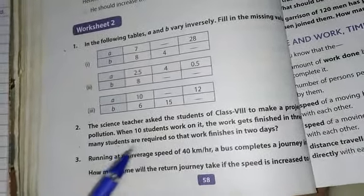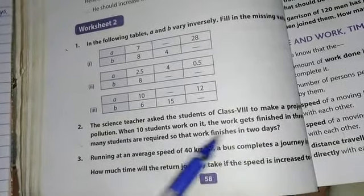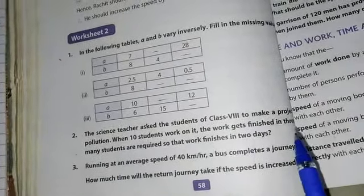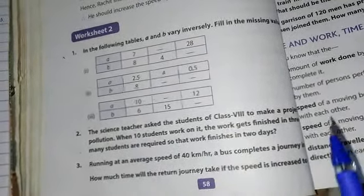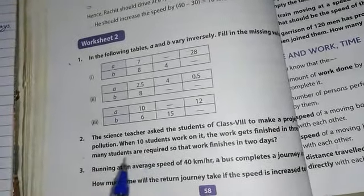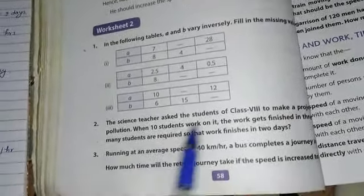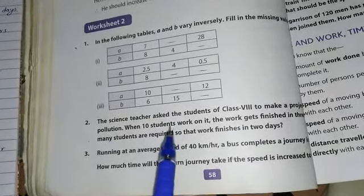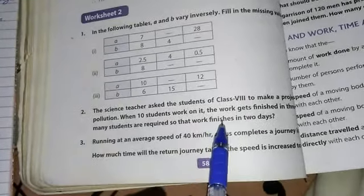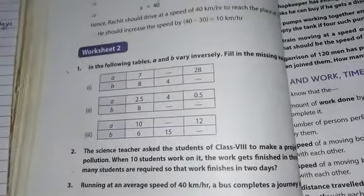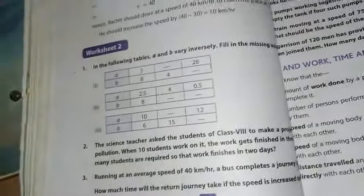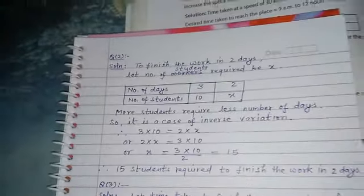More students means less number of days. So now it is clear there is an inverse variation, and now the question is how to solve, how to write the steps.